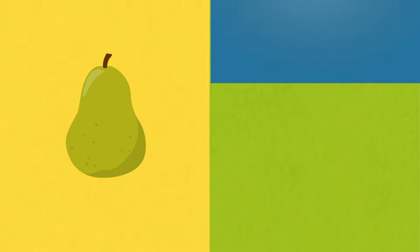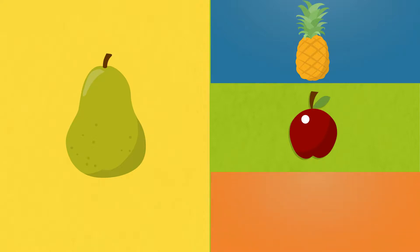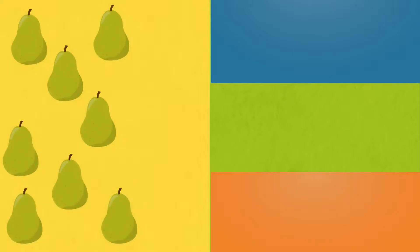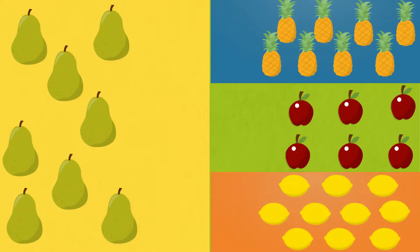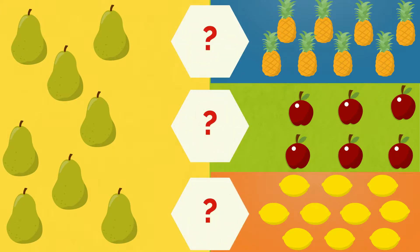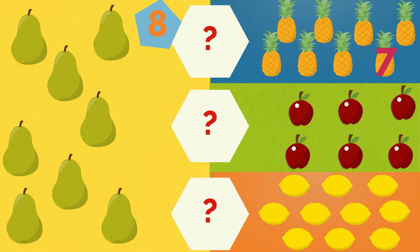Well done! Pear. Pineapple. Apple. Lemon. Let's compare. One. Two. Three. Four. Five. Six. Seven. Eight. Eight pears. One. Two. Three. Four. Five. Six. Seven. Eight. Eight pineapples. The pears are the same number as the pineapples.